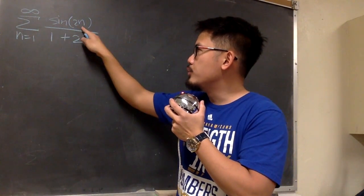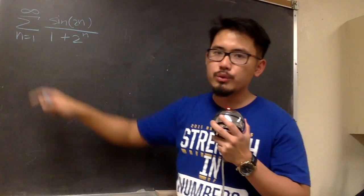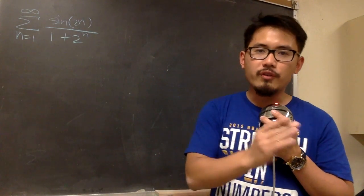We have a trouble here, sine of 2n, because when we plug in n values, n is equal to 1, 2, 3, 4, 5, and so on.